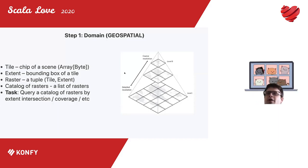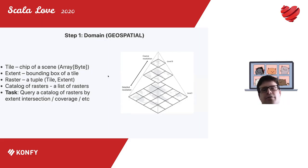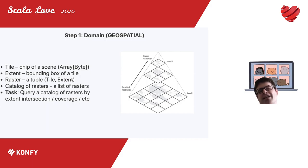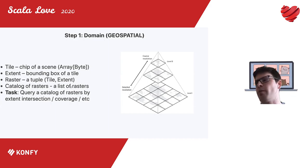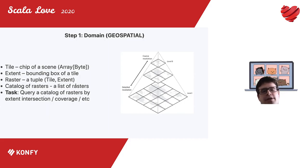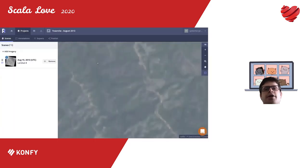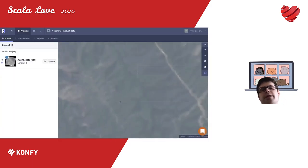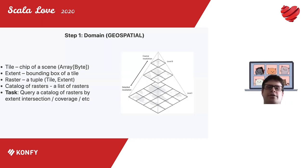A tile is a small chip of a scene extracted from satellite imagery. An extent is a bounding box of a tile — just bounding box coordinates in whatever projection. A raster is a tuple of a tile and an extent. The problem our language will solve is how to query a catalog of rasters by extent intersection, coverage, and so on — because even when moving a map, we're querying: 'please give me all tiles that intersect the area of interest.'